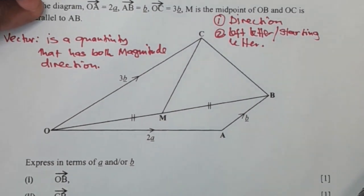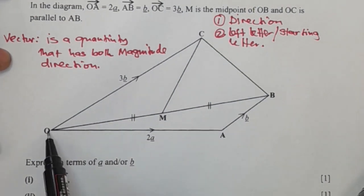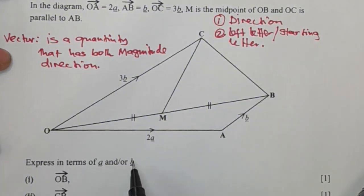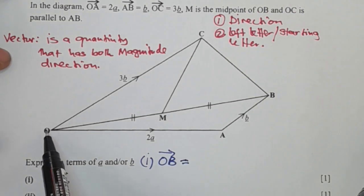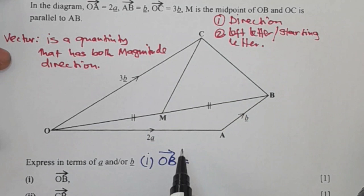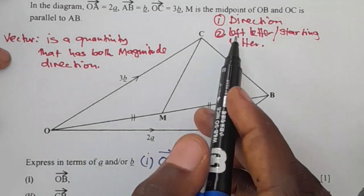So with that, we can now look at this question. They are saying express in terms of a and or b, vector OB. So this is the vector. Vector OB. We're going to apply the second rule here. You can see that the letter that is on the left is O. So we're going to apply this second rule. The left letter here is O, which is also the letter that is starting.